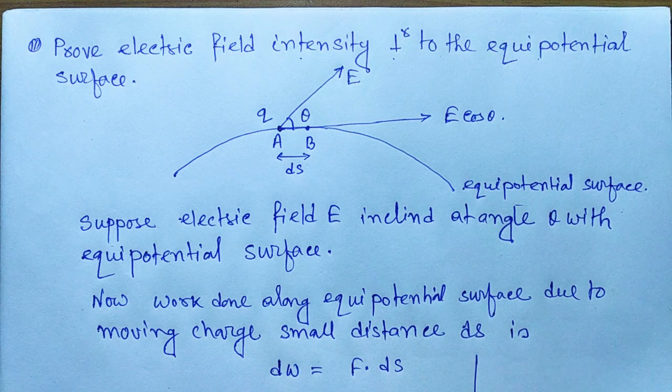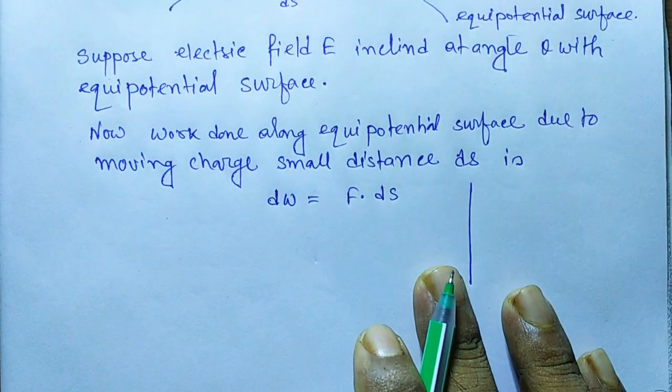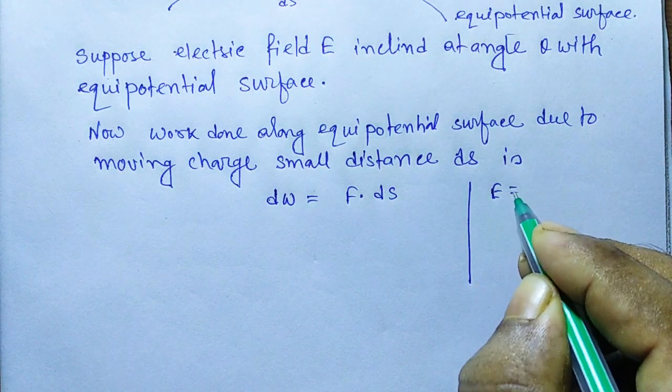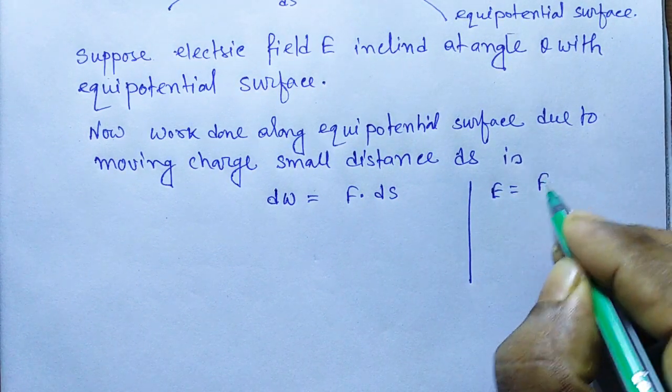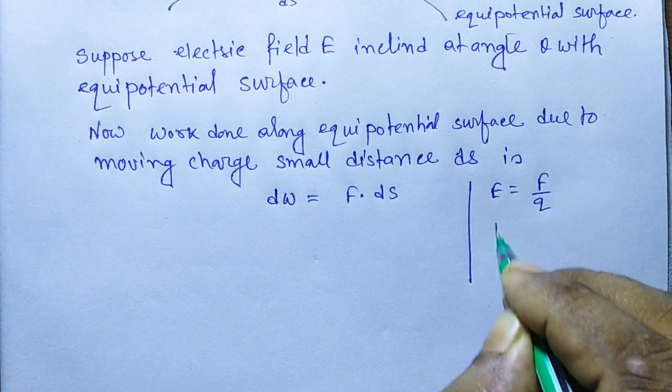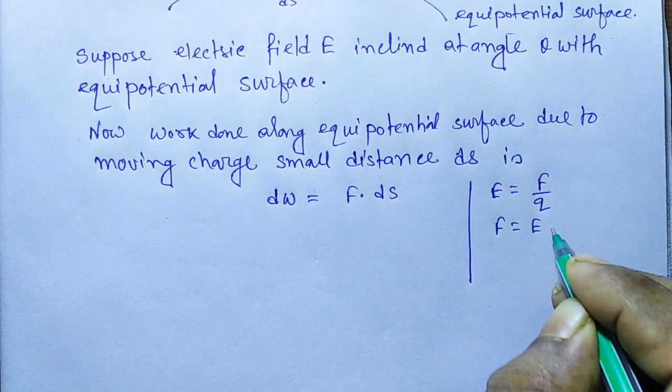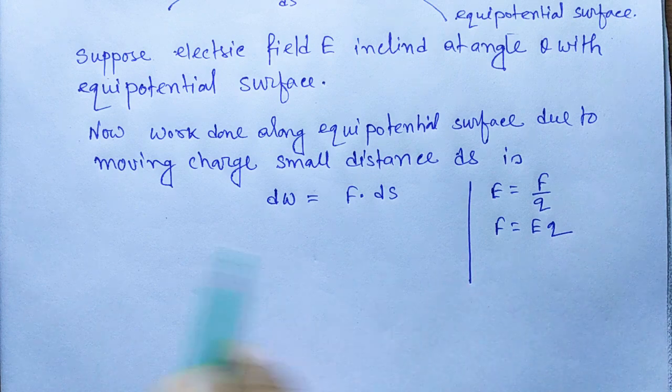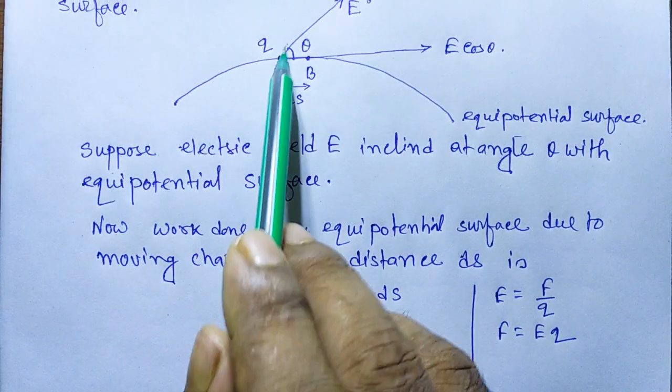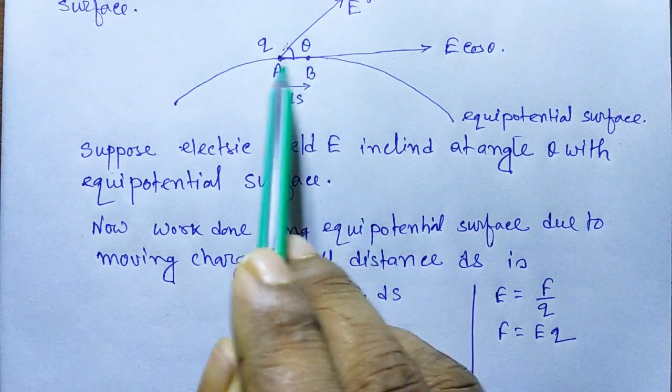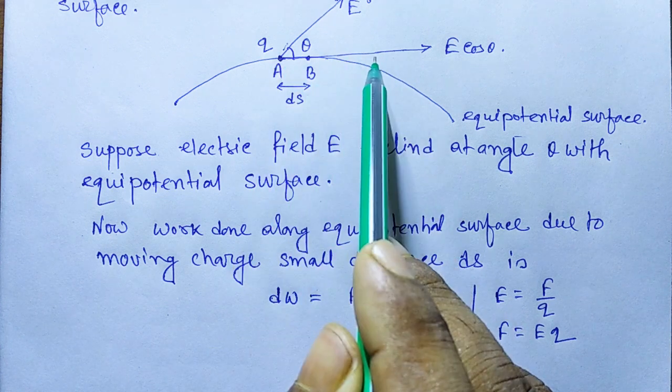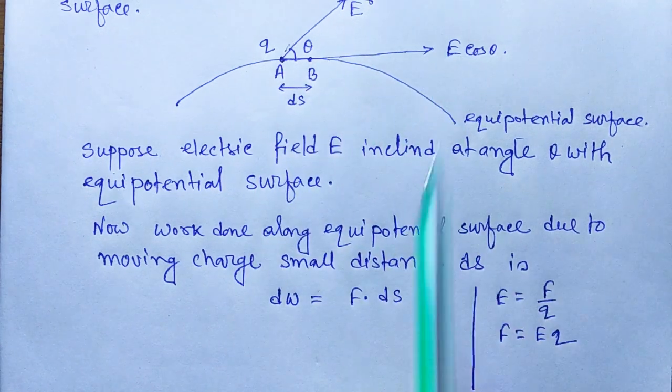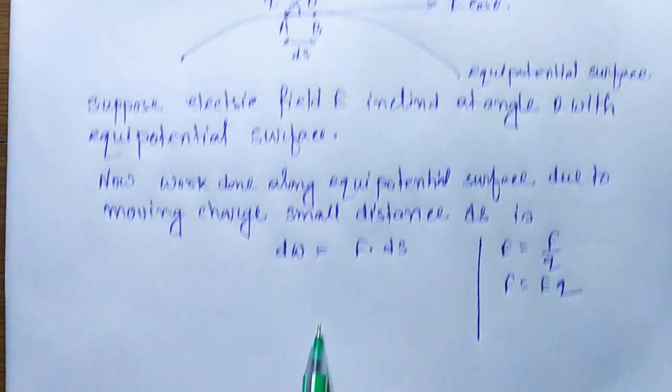Now we know E equals F by Q, so force equals EQ. The charge is moving along the tangential surface of the equipotential, which is the horizontal surface. So here E is E cos theta.